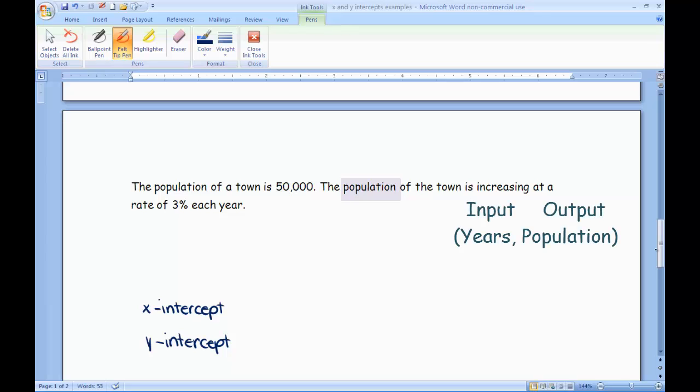That means for the x intercept, I want to know when the population is equal to 0. Well, that's a problem in this one because the town's at 50,000 to start with and going up 3%. That means there isn't going to be a time when the population is 0. So to explain my reasoning why it's none, I need to say that the population won't ever be 0.